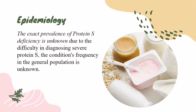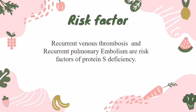Moving on to the epidemiology, the exact prevalence of protein S deficiency is unknown due to the difficulty in diagnosing it. According to the National Organization for Rare Disorder or NORD, protein S deficiency is a rare genetic disorder of blood coagulation that is caused by a variation in the PROS-1 gene.